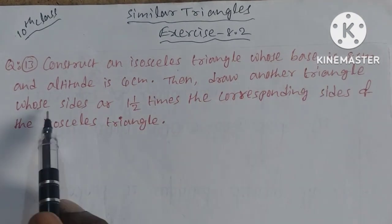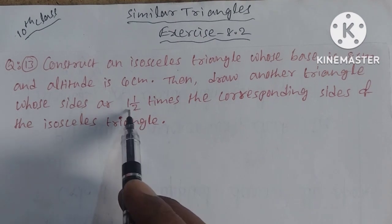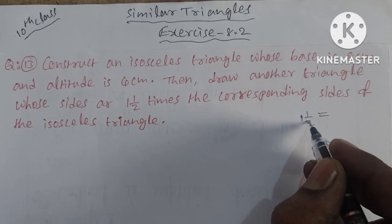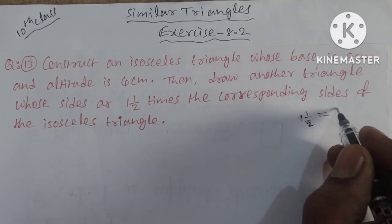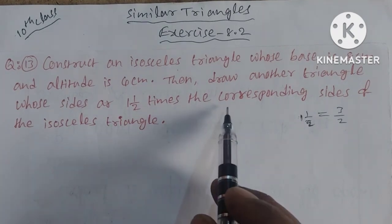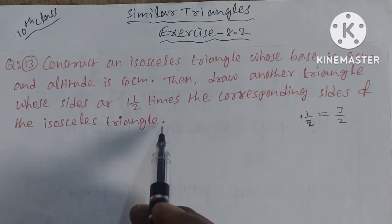Then draw another triangle whose sides are 1 and 1/2 times. 1 and 1/2 is a mixed fraction equal to 3/2 (2 plus 1 equals 3, divided by 2). This is 3/2 ratio times the corresponding sides of the isosceles triangle.